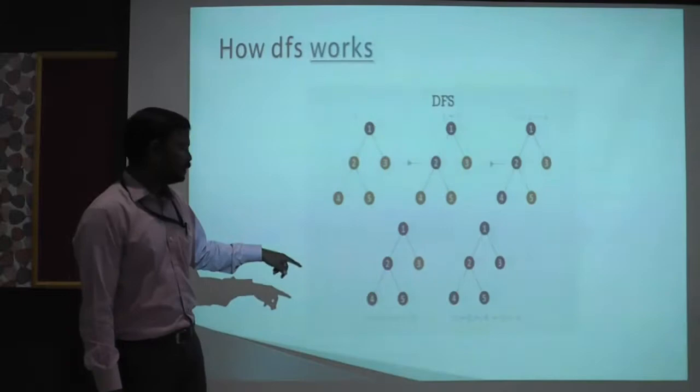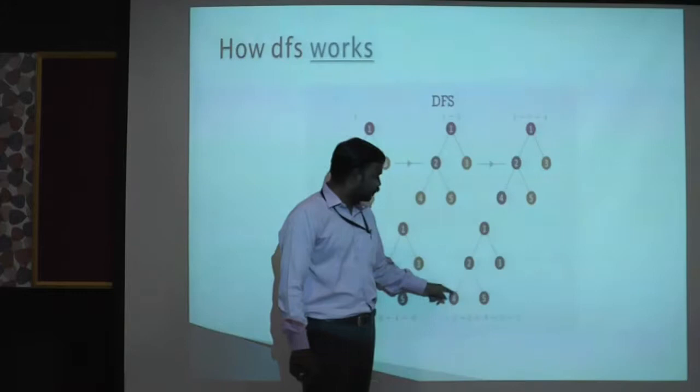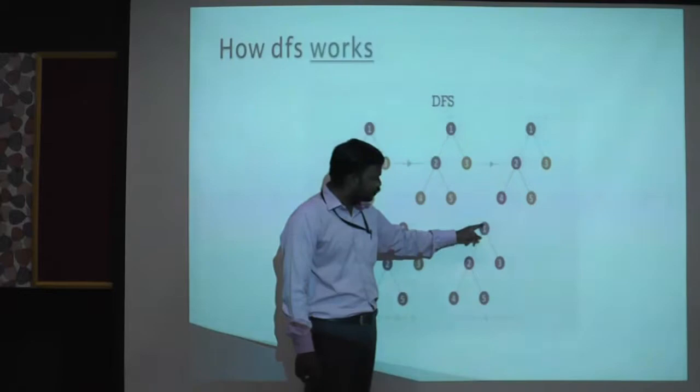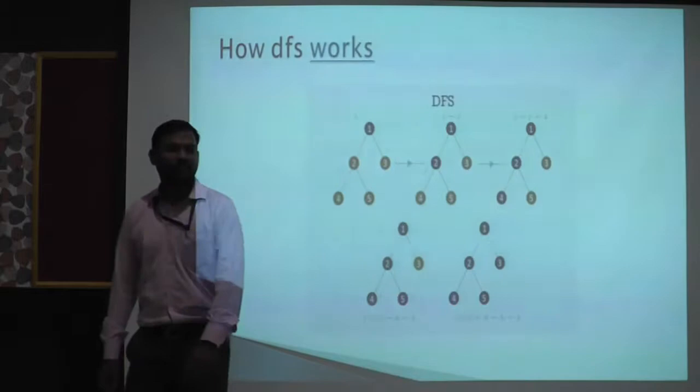Once all the nodes are visited, it pops all the elements from the stack, and finally it returns the state. The order of traversal is given below. It goes from one, two, four, then it backtracks to two and goes to five, then it backtracks to two, then backtracks to one, and last it goes to three. So these are the steps followed in depth-first search.